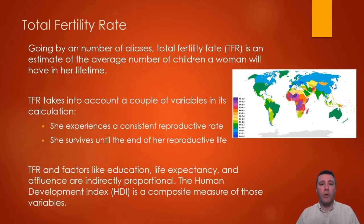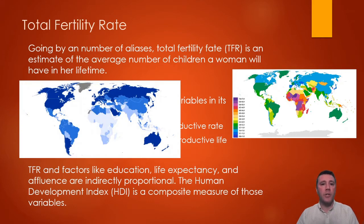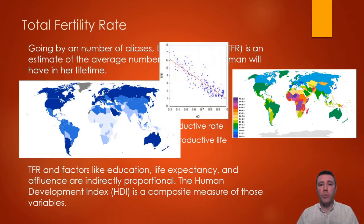Those three categories are collectively measured with a statistic called Human Development Index, or HDI. In this world map, countries in darker shades of blue have relatively higher HDIs than those with lighter blues. The relationship between TFR and HDI is inverse — as education, life expectancy, and wealth increase, total fertility rate decreases. The observation is that in societies with more access to education, healthy diets, healthcare that increases life expectancy, and money, people have fewer children.